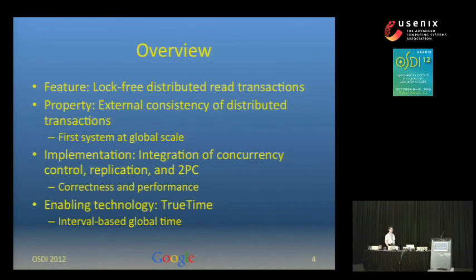I'll briefly describe the implementation, which involves integrating concurrency control, replication, and two-phase commit. That integration is necessary both for correctness and for performance. And finally, I'll describe the enabling technology that makes this all possible, which is a global clock called TrueTime. TrueTime exposes uncertainty in the clock by representing time as an interval.